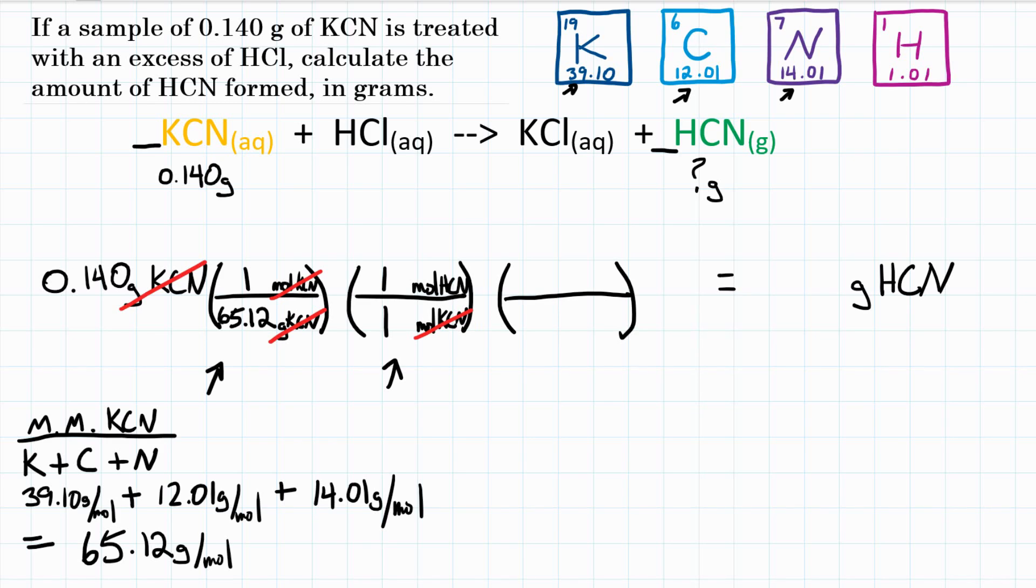We want to go to mass. We've got to get rid of the moles of HCN, and we want grams of HCN. For this third step, we need the molar mass of HCN, hydrogen cyanide. We need, for one mole, how many grams is that? We're going to have to calculate the molar mass of HCN.